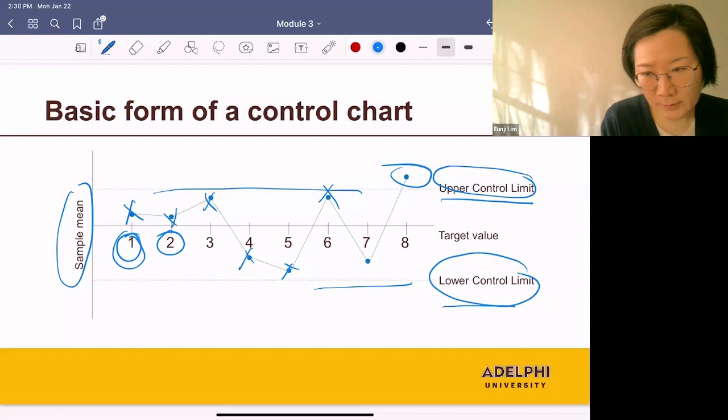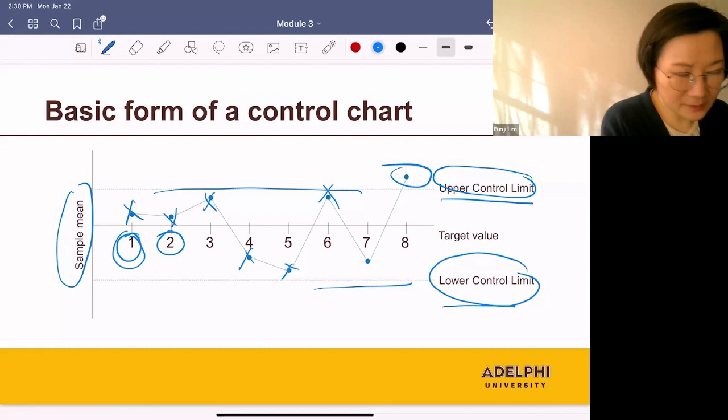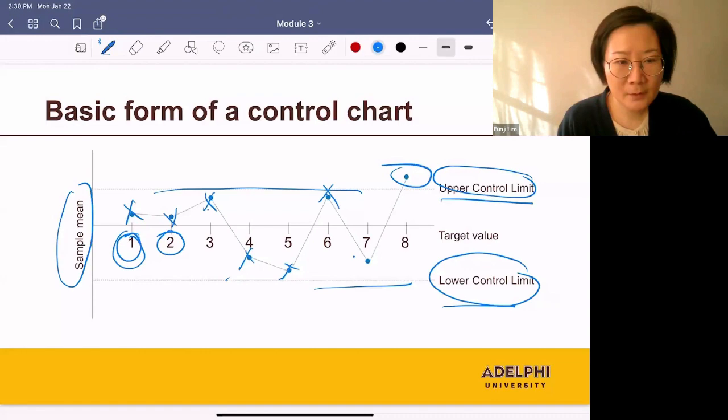Now, if we look at these sample means, no two are identical. We always see variations over time, which we can categorize into two groups.